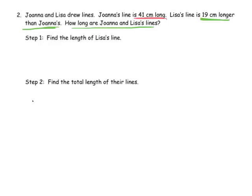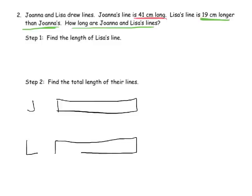So following the classic bar modeling technique, we're going to label them J and L. And we're going to begin by drawing both of their tape diagrams identically. And you can see it doesn't have to be perfect. My drawings are definitely not perfect. And then once we've labeled J and L, and we've drawn two bars the same length, now we're going to go back and read the questions so that we can edit it as necessary. So it says, Joanna and Lisa drew lines. We've got that covered. Joanna's line is 41 centimeters long. So that means we can label her tape diagram as 41.